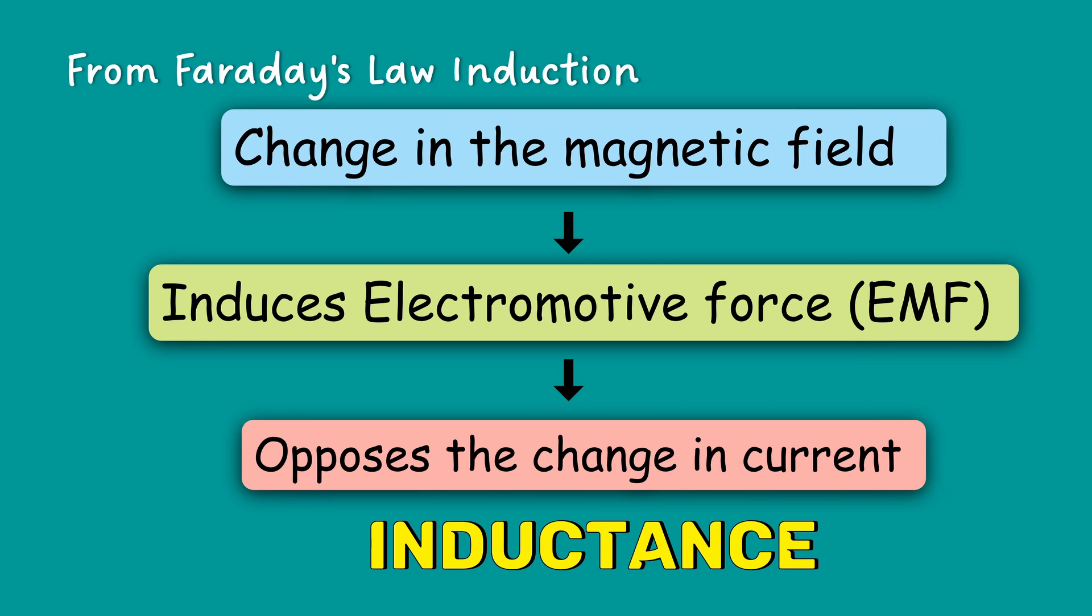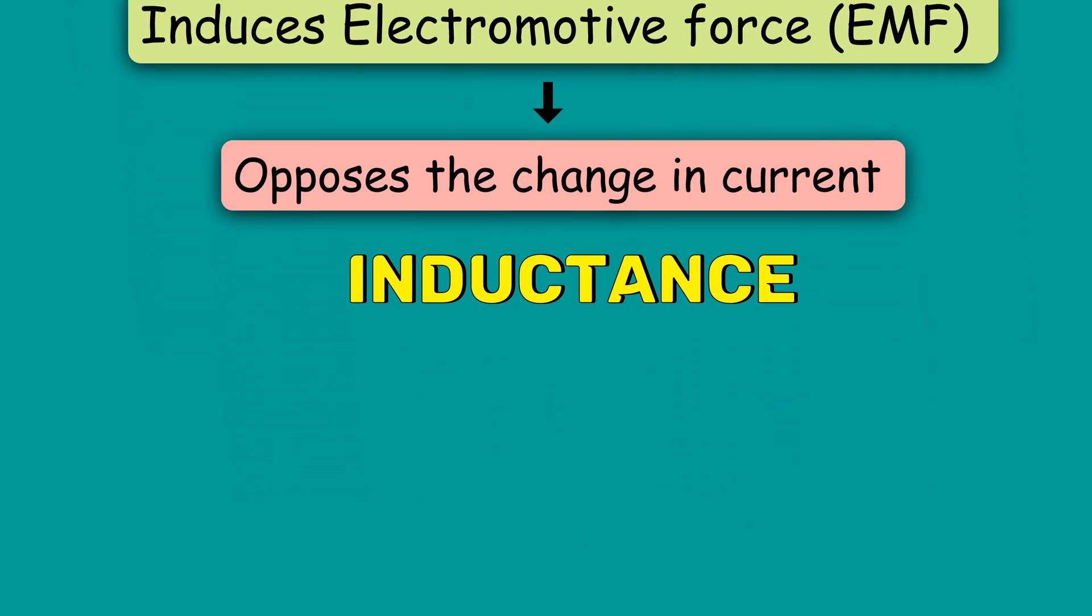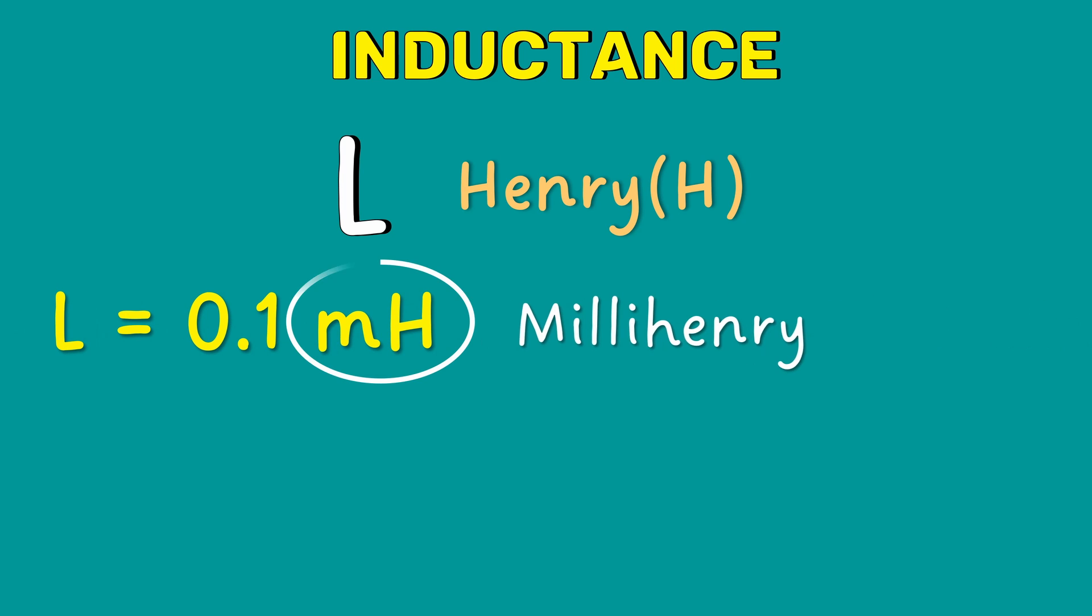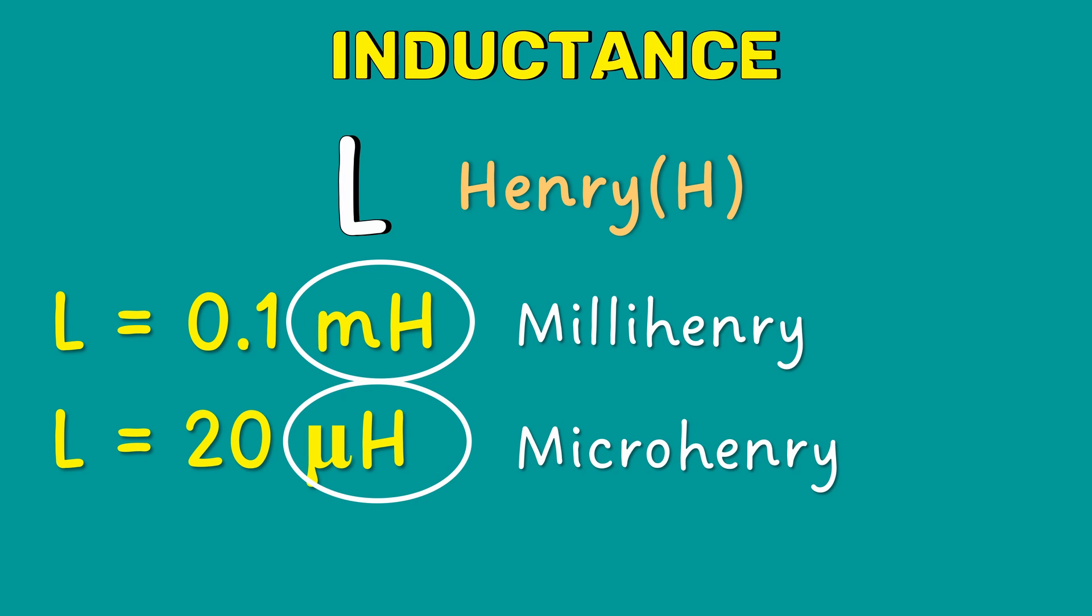The inductance is represented using the symbol L. The SI unit of inductance is Henry. Because the Henry is such a large unit, many inductors are measured in smaller quantities such as millihenry and microhenry. Occasionally, nanohenry is also used.